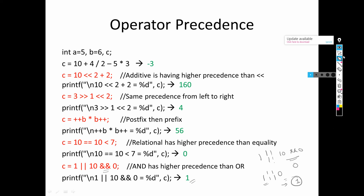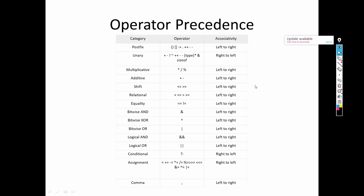You just need to focus on the concept of operator precedence and remember the precedence table. Whenever more than one operator exists in a single statement, check which operator should execute first. If two operators have the same priority, use associativity — whether left to right or right to left — to determine which executes first. Thank you for watching.